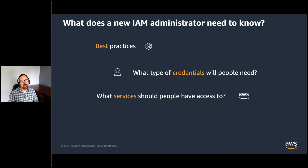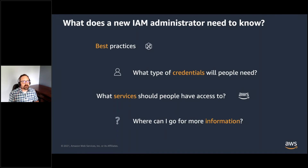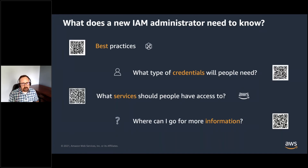It does take some time and expertise to craft policies that will provide your team with only the permissions they need. To help, AWS provides managed policies. These cover common use cases such as providing full access to a particular service or enabling job roles like administrators. AWS will keep these policies up to date over time, which helps to reduce your administrative overhead. Many customers are able to meet their needs using AWS managed policies, but in other cases you can opt to author them from scratch or use a point-and-click visual editor in the IAM console. The QR codes on the screen will take you to other resources to help you dive a bit deeper and learn more about how the service works.